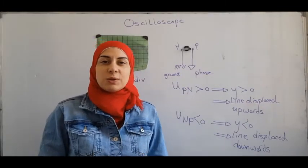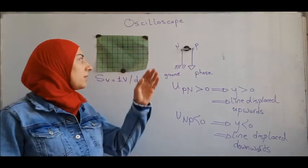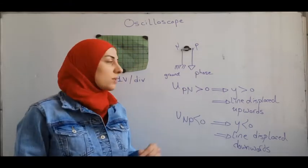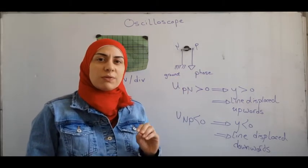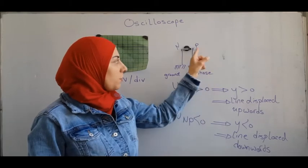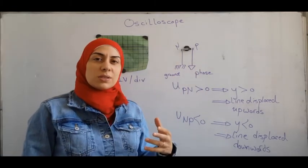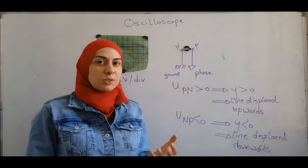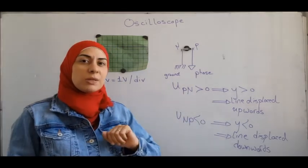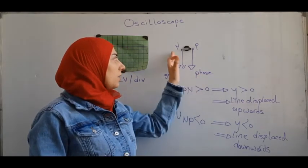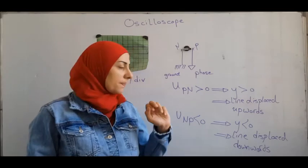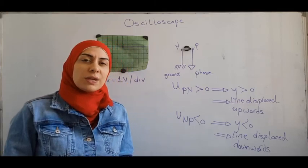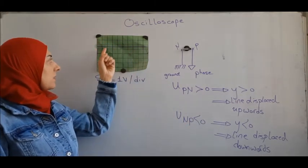If you want to measure a DC voltage using an oscilloscope, you will obtain a constant horizontal straight line on the screen. The oscilloscope always reads from the probe (face) to the ground. If the probe is connected to the positive pole and the ground to the negative pole, the oscilloscope reads UPM (positive), so the line is displaced upward. If reversed, it reads UMP, which is negative, and the line is displaced downward.